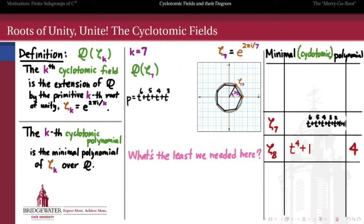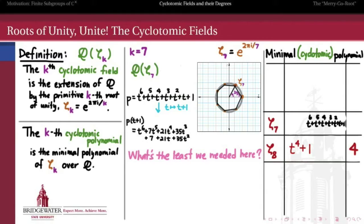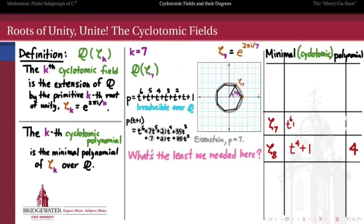But is that irreducible? We can show this polynomial is irreducible by shifting t to t plus 1. When I make that substitution, I get t to the 6th plus 7t to the 5th plus 21t to the 4th plus 35t cubed plus 35t squared plus 21t plus 7. Those coefficients are exactly the binomial coefficients in the 7th row of Pascal's triangle, and all of them except for the leading 1 are multiples of 7. Since the constant term 7 is not a multiple of 7 squared (which is 49), this polynomial satisfies Eisenstein's criterion with prime 7. Therefore p(t+1) is irreducible, and hence p itself is irreducible over the rationals.